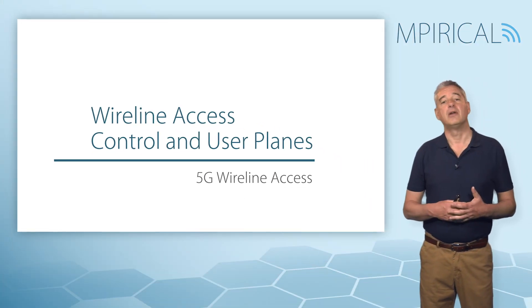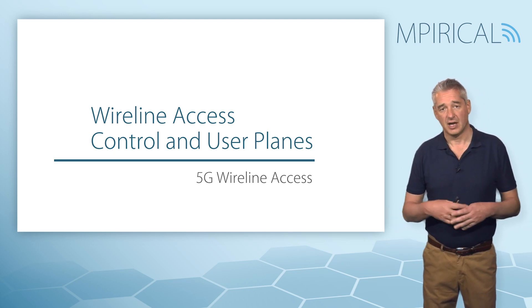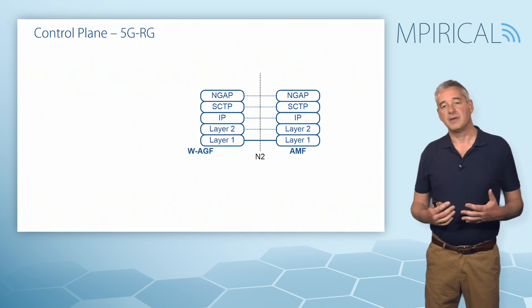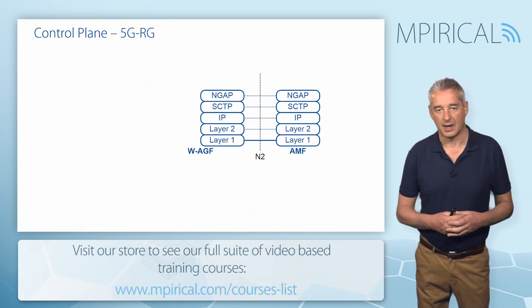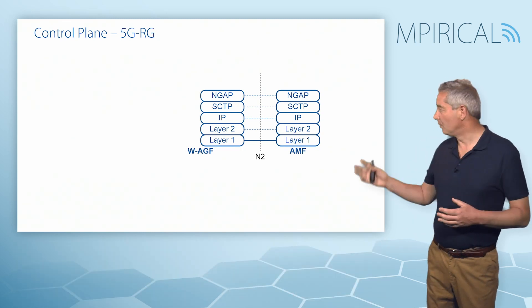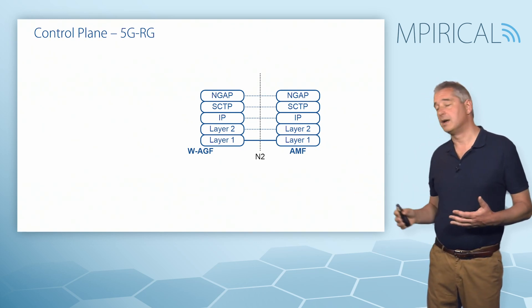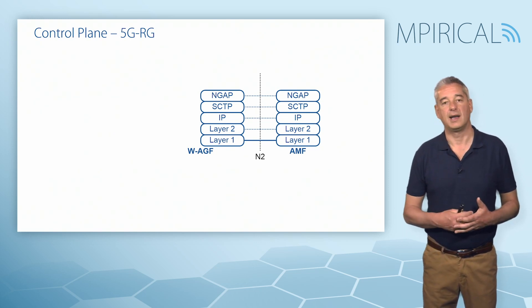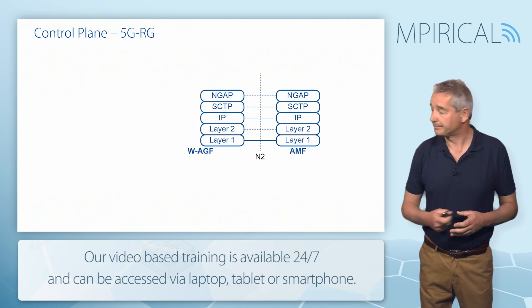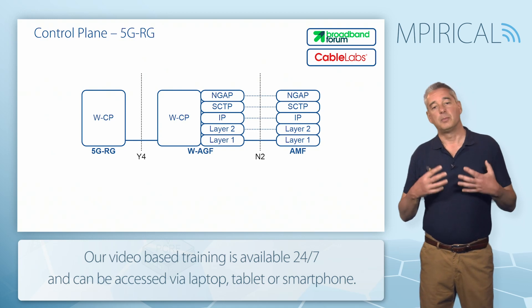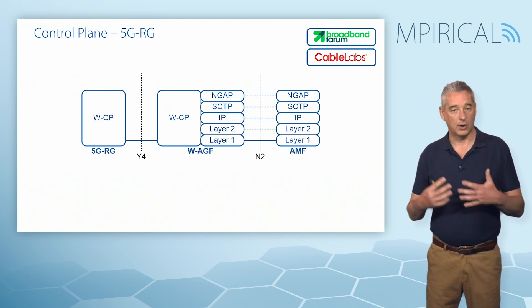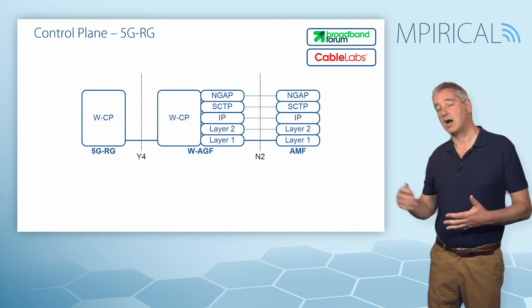Let's look at the control and user plane protocol stacks across these various connections, which will help us understand the difference between the 5G and Fixed Network Residential Gateways. For the control plane of the 5G Residential Gateway, across N2 we see a standard 3GPP protocol stack: NGAP at the top, using the services of SCTP, down to IP, Layer 2, and Layer 1. Across Y4, the protocol used is defined as the Wireline Control Protocol, specifically defined by either the Broadband Forum or CableLabs depending on the physical medium.